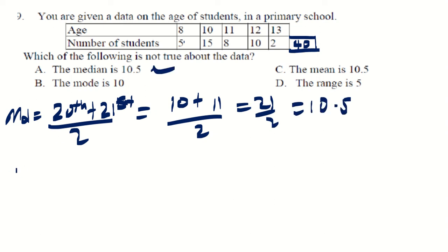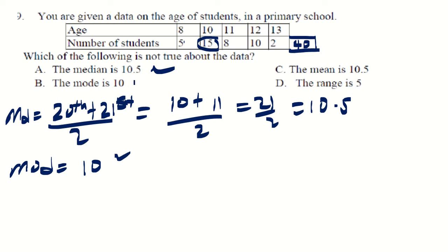The mode is the value with the highest frequency. The largest frequency is 15, which belongs to age 10. So the mode is 10.